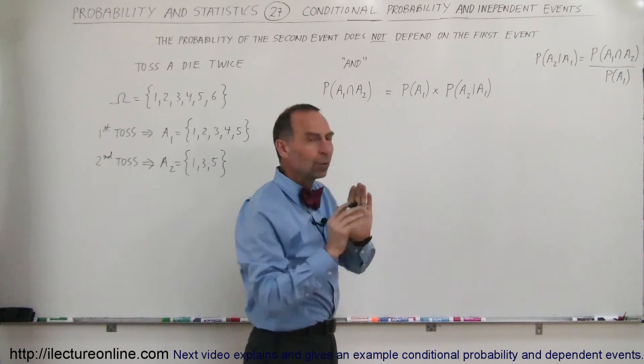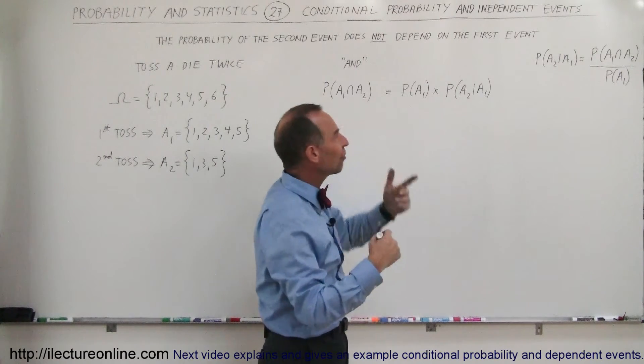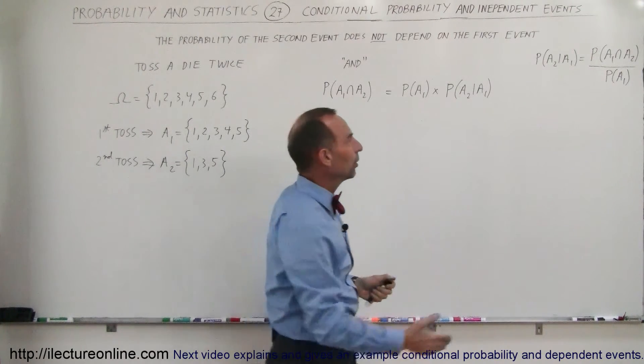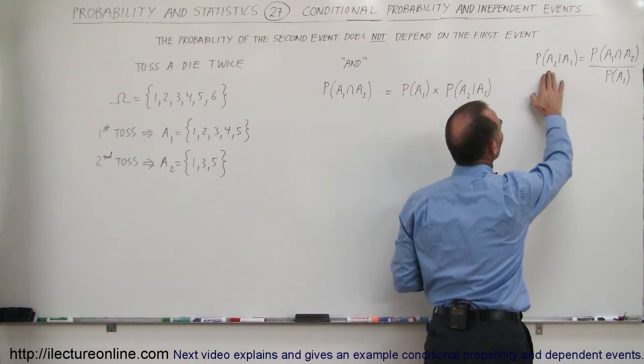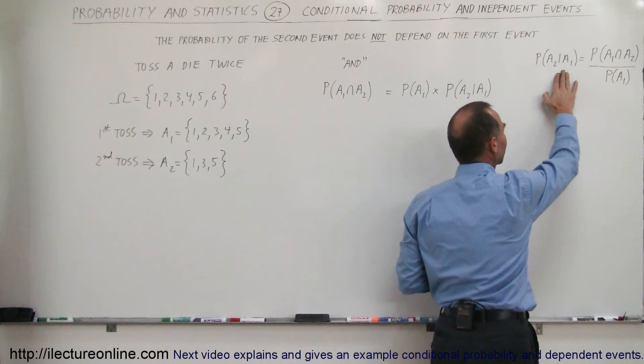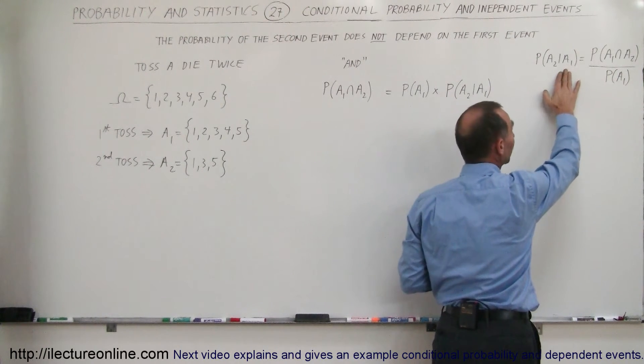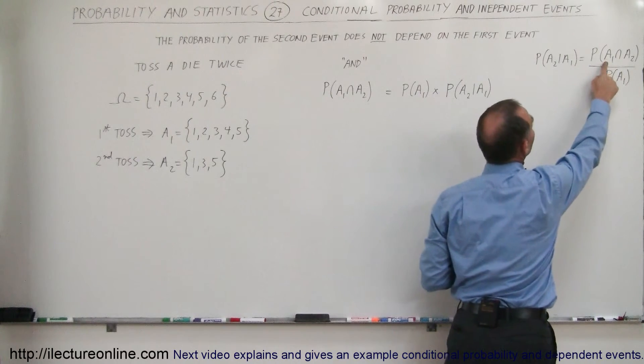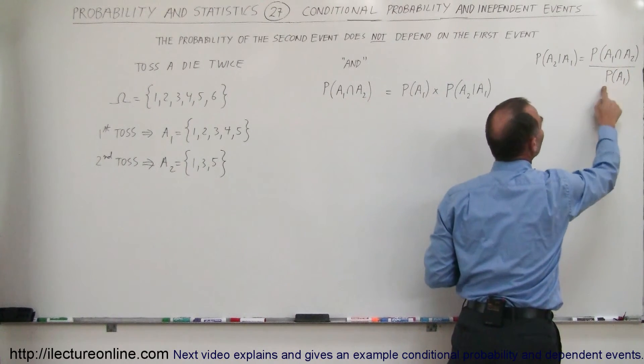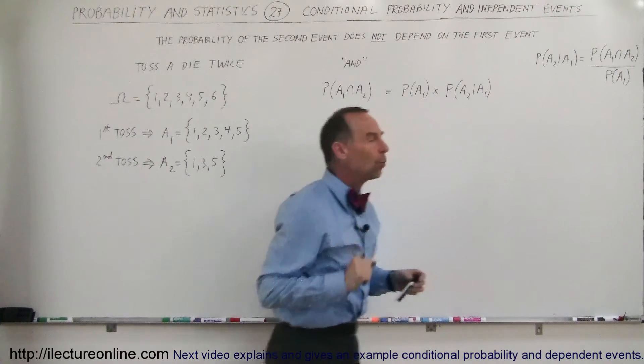Now here, where this came from, came from the dependent formula. The probability that A2 will occur, taken into account that A1 has occurred, is equal to the probability of A1 and A2, divided by the probability of A1.